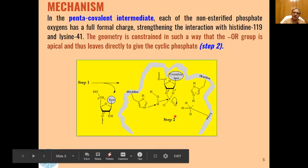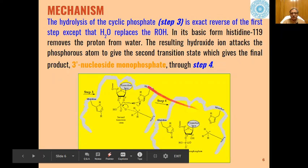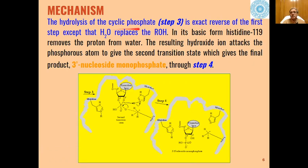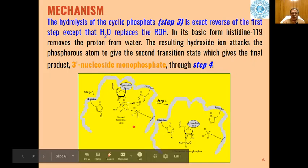Then in the next step, that is step 3, the hydrolysis of this cyclic phosphate takes place, which is exactly the reversal of the first step. Whereas in the first step we used ROH, that is an alcohol, here the nucleophile is water. So hydrolysis takes place in the presence of water.